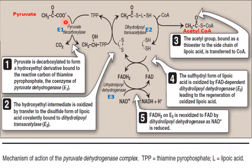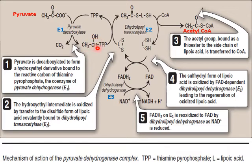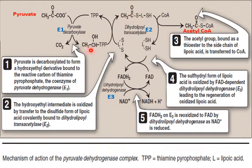In the first reaction, E1 (pyruvate decarboxylase, also called pyruvate dehydrogenase) decarboxylates pyruvate and binds thiamine pyrophosphate with the acetyl portion of pyruvate, forming a derivative called the hydroxyethyl-TPP derivative. In the second reaction, E2 (dihydrolipoyl transacetylase) transfers oxidized lipoic acid to the hydroxyethyl derivative; TPP is regenerated and oxidized lipoic acid binds with the acetyl portion.